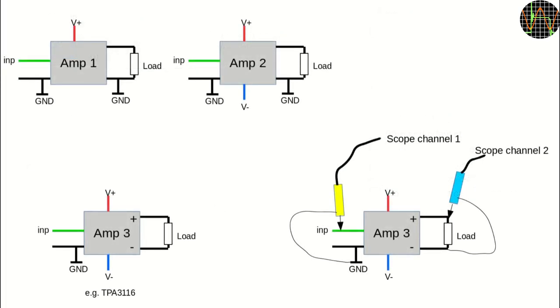Amps of type 1 have only a single supply against ground. Both input and output are referenced against that ground. These are generally unproblematic in use but because of the single supply rail the output voltage is limited and therefore these amps are generally not that powerful. Amps of type 2 and 3 use two supply rails. One is positive and the other negative against ground.